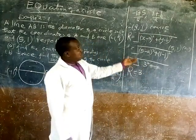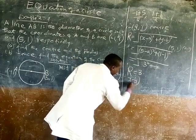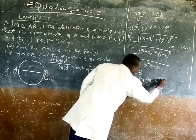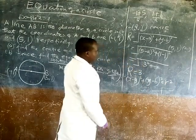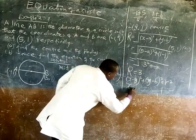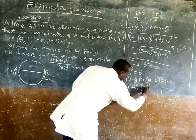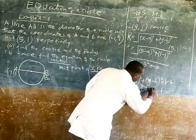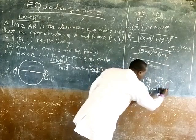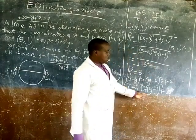Our radius is equal to 3. But we know the formula for getting the equation of a circle, which is equal to x minus a square plus y minus b square is equal to r square. Our a is 2, x minus 2 square plus y minus 1 square equal to 3 square. 3 square is 9. So that is our equation.